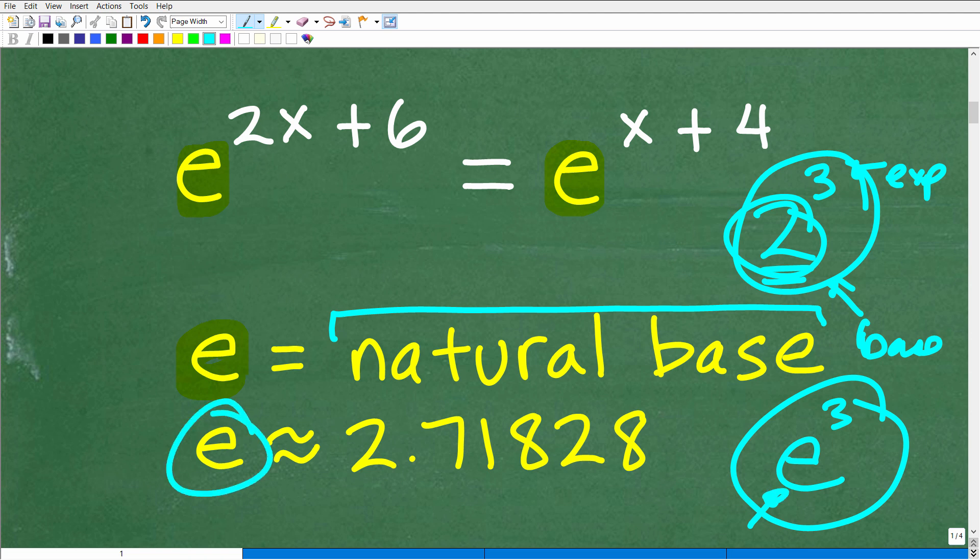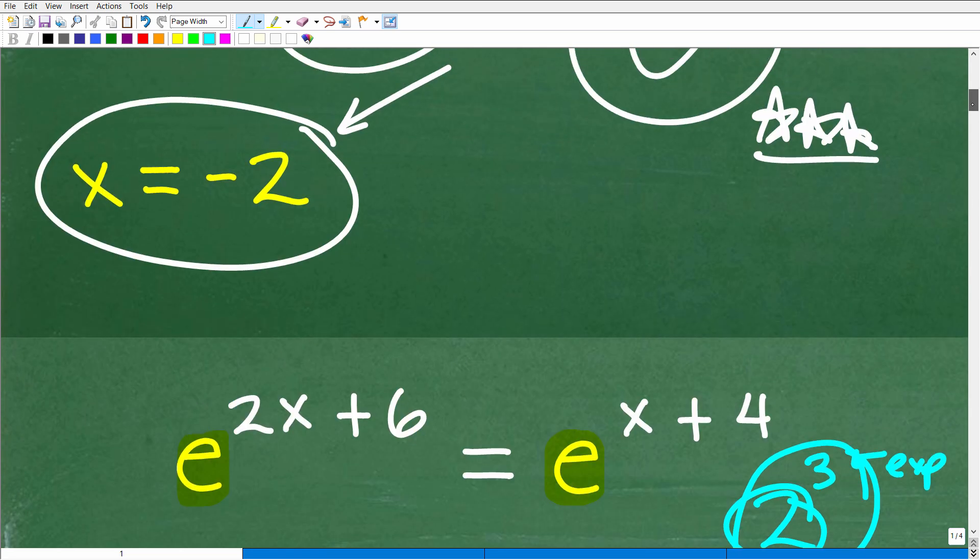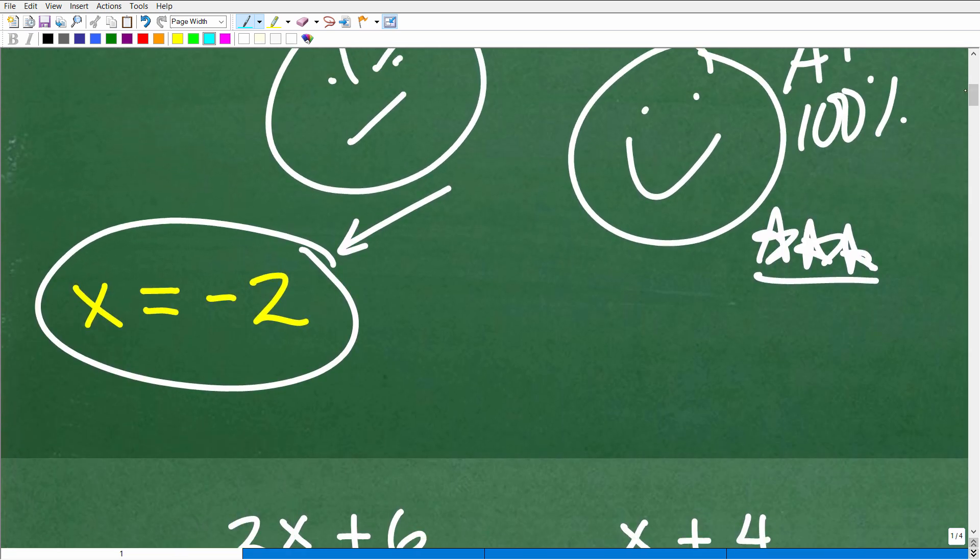So e, this is the actual number. It's approximately equal to 2.71828, and this thing goes on and on and on. Now, the natural base e is tremendously important in mathematics. Namely because we're using this word natural here because exponential functions like things that, well, let's talk about some modeling of exponential functions in real life, something like population growth.